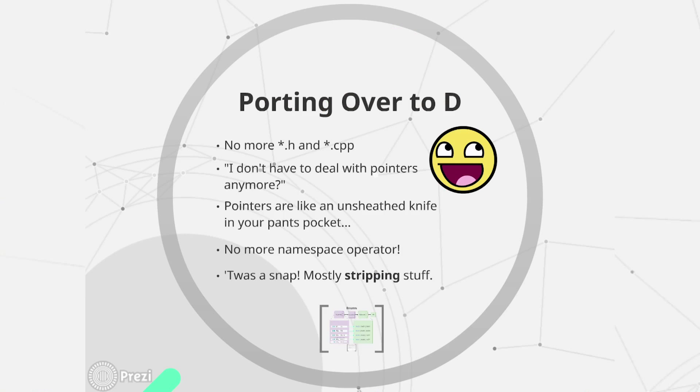I sat down and asked myself: I don't have to deal with pointers anymore? Wow! Because pointers are like carrying an unsheathed knife in your pocket — you can't really make any sudden moves if you're touching pointer-related code. When I wanted to change something in my virtual machine, if I wasn't conscious of how I was using pointers, I'd get bitten pretty quickly. One of our professors, Neil Harrison, describes pointer errors as strange and wonderful things — wonderful because you just sit there and wonder what happened.